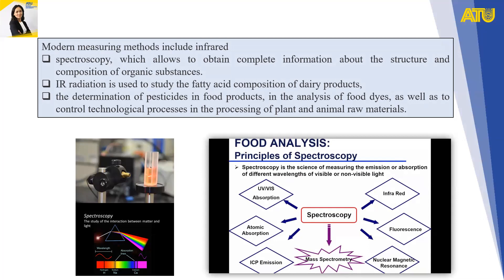Modern measuring methods include infrared spectroscopy, which allows obtaining complete information about the structure and composition of organic substances. NIR radiation is used to study the fatty acid composition of dairy products, the determination of pesticides in food products, the analysis of food diets, and to control technological processes in the processing of plant and animal raw materials. Here in the picture you can see spectroscopy — the study of the interaction between matter and light — along with food analysis applications and principles of spectroscopy.